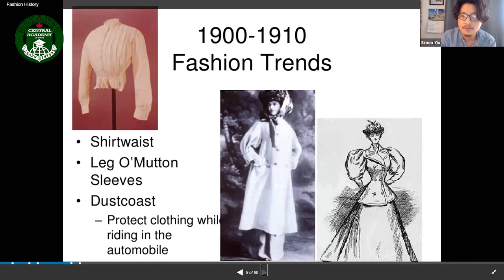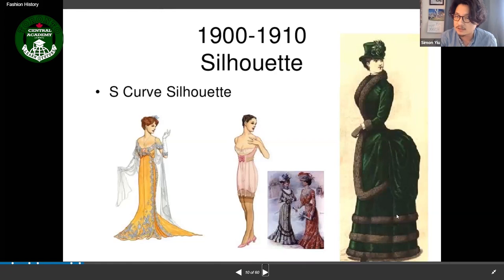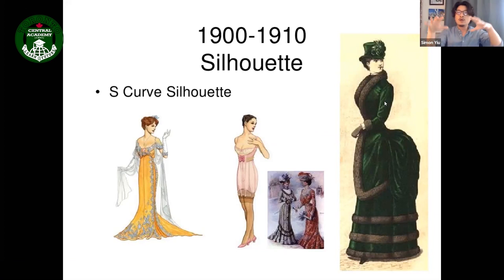The silhouette of the Edwardian era was an S-curve shape. In the Victorian era we had the hourglass; now in the Edwardian era we have the S-shaped silhouette, where the bottom gets a little bit bigger.